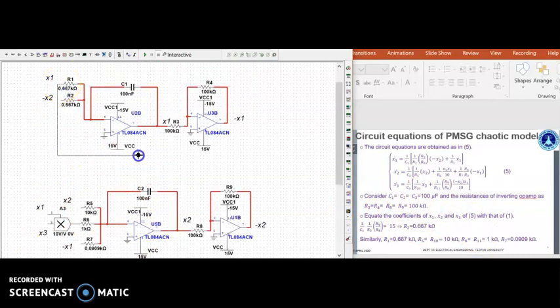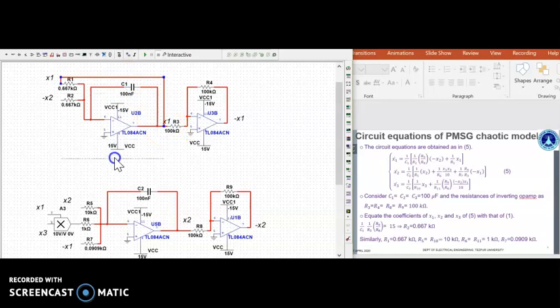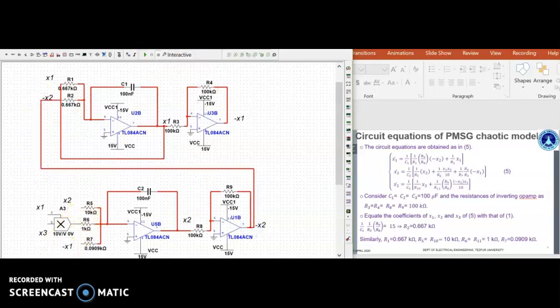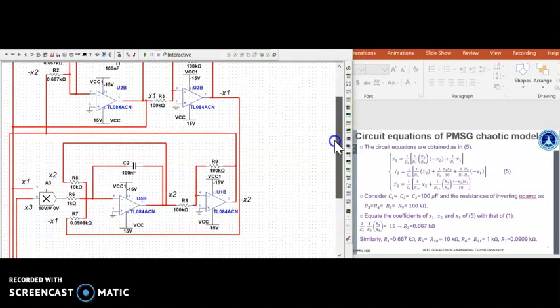We start connecting x1 to x1, then minus x2 to x2. Similarly, we connect the connections everywhere here. Now, have you observed that we have replaced the C1 from 100 microfarad to 200 nanofarad to avoid saturation.